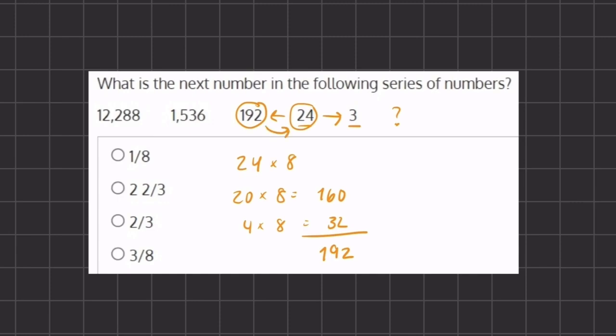And therefore, our pattern will most likely be dividing by 8 every time. And so if we continue this pattern, if we take 3 and we divide it by 8, we will get 3/8 as the next number in our series. And that corresponds with answer D.